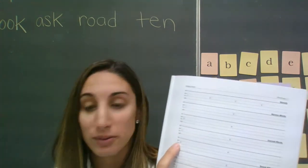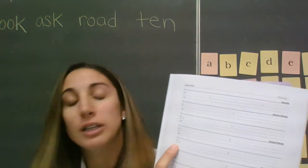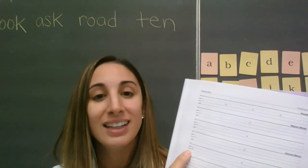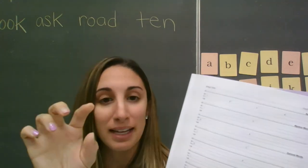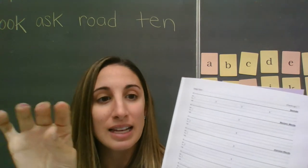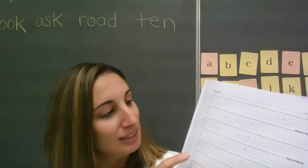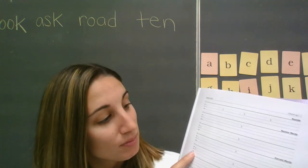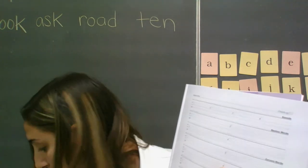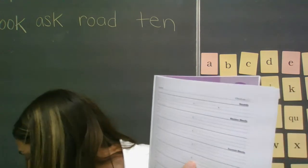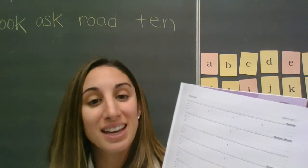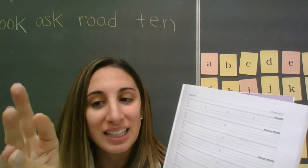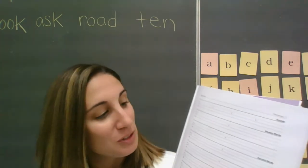Down to the next row, number three. I want you to write the word click. Say it. Click. Let's tap it. K - l - i - k. Click. And number four, the word is milk. Say it. Milk. Tap it. M - i - l - k. Milk. Good job.